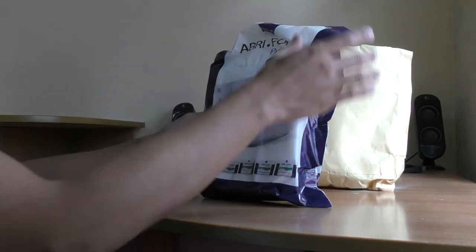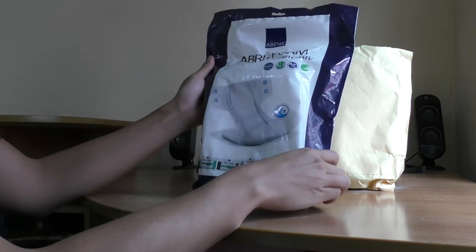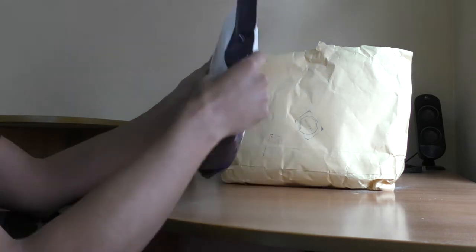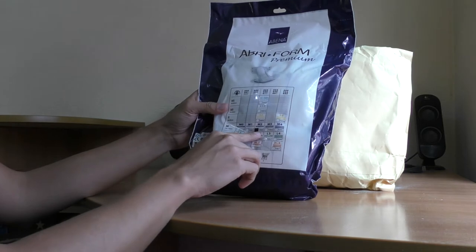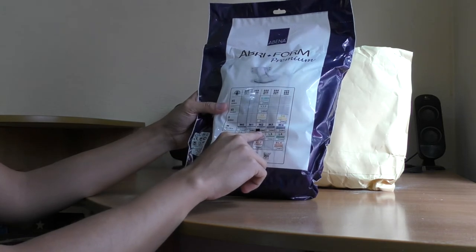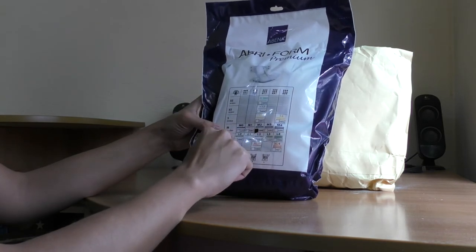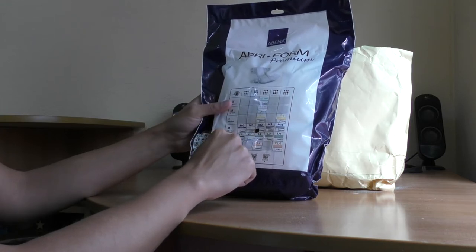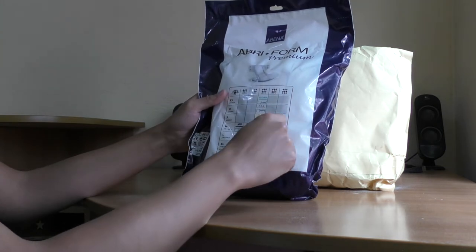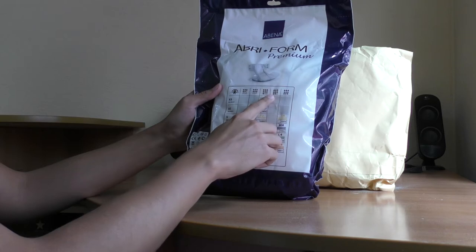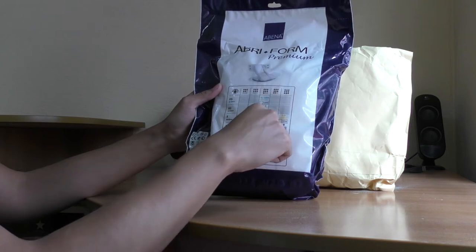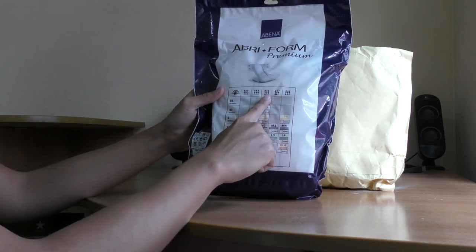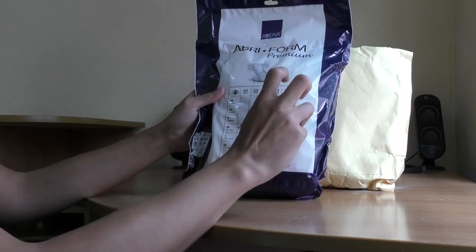First of all, let me see. Abena Form Premium, and this is size medium for a weight of 70 to 110 cm. It is the 5, 7. They have an indicator of the absorbency, this is in level 7, level 2.